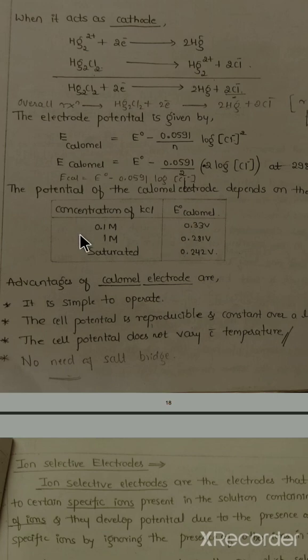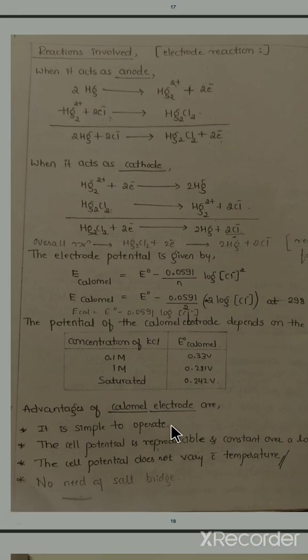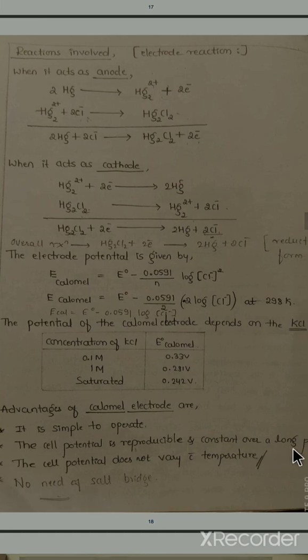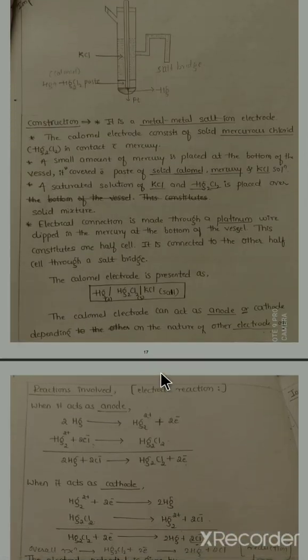Some advantages of the calomel electrode: First, the construction is simple and it is very simple to operate. Second, the cell potential is reproducible and constant over a long period of time. Third, the cell potential does not vary with temperature — as seen in the equation, temperature is not a variable. Fourth, no salt bridge is needed. This is all about the calomel electrode; I hope you understood the concept.